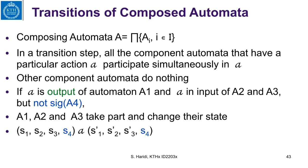Now let us look at transitions — how the composition makes computation steps. The idea is simple: if an output action of one component has matched a number of input actions of other components, all these components will do one step together simultaneously. In a transition step, all the component automata that have a particular action A participate simultaneously in that action A, while other components do nothing.